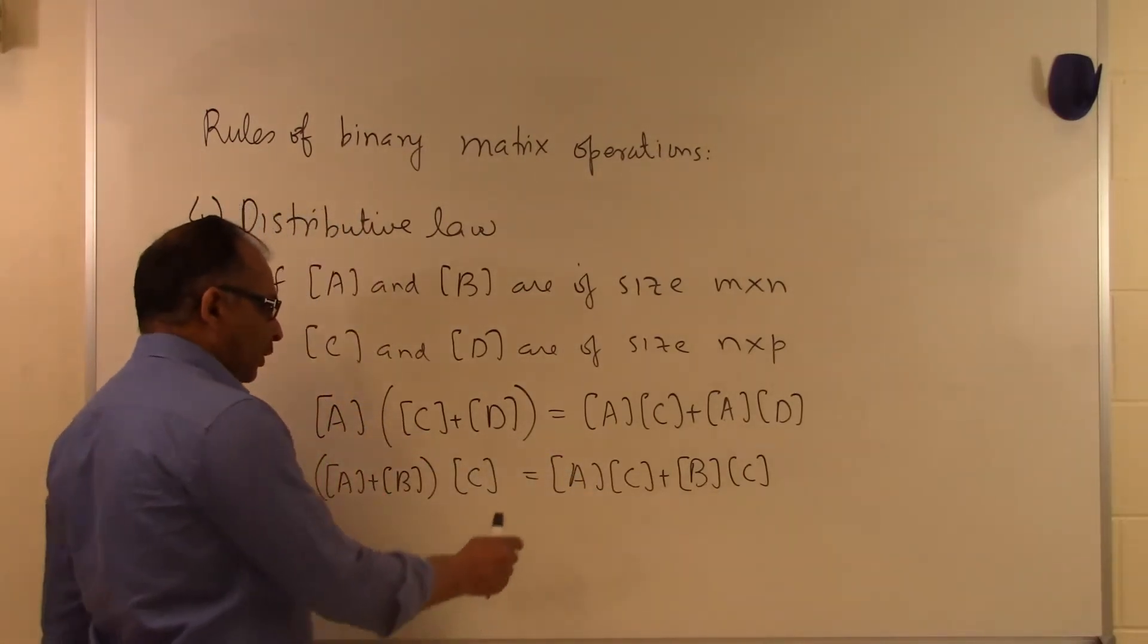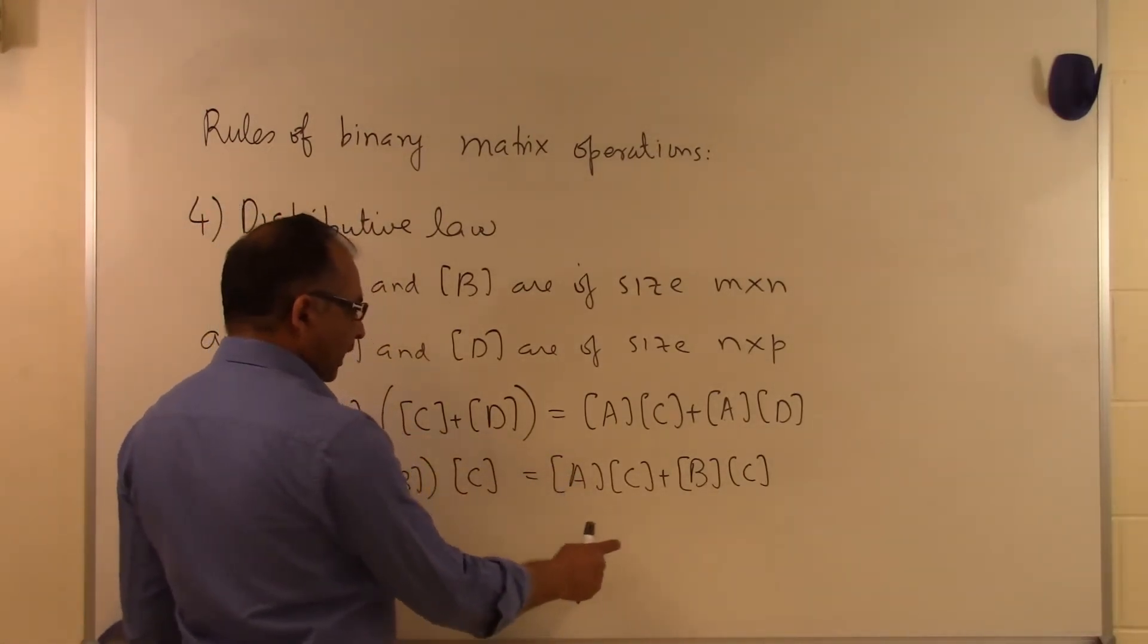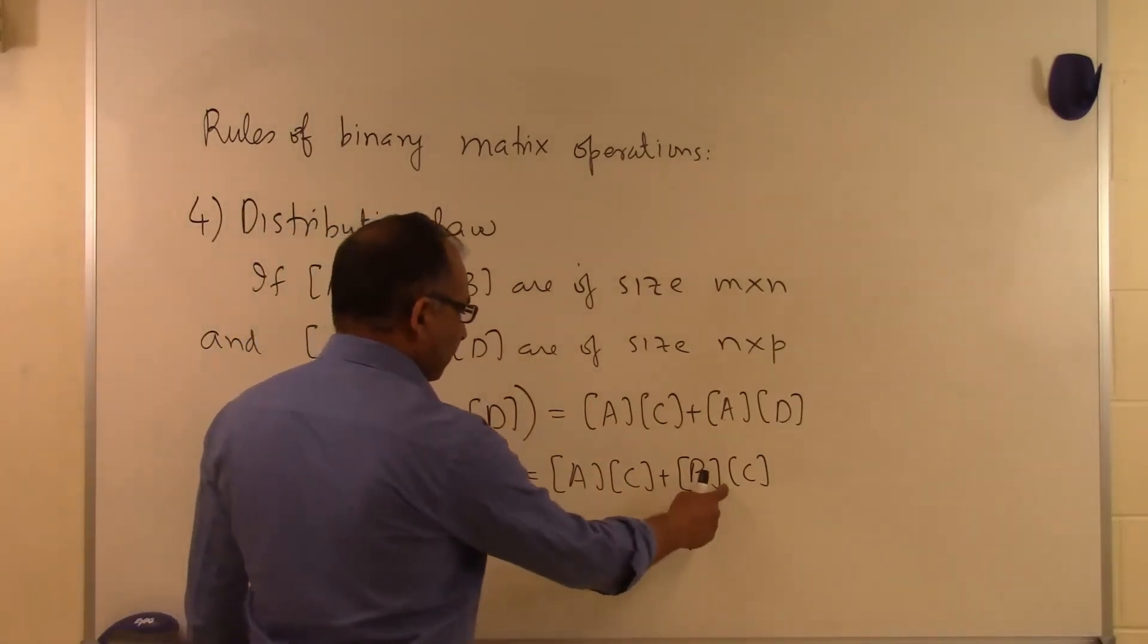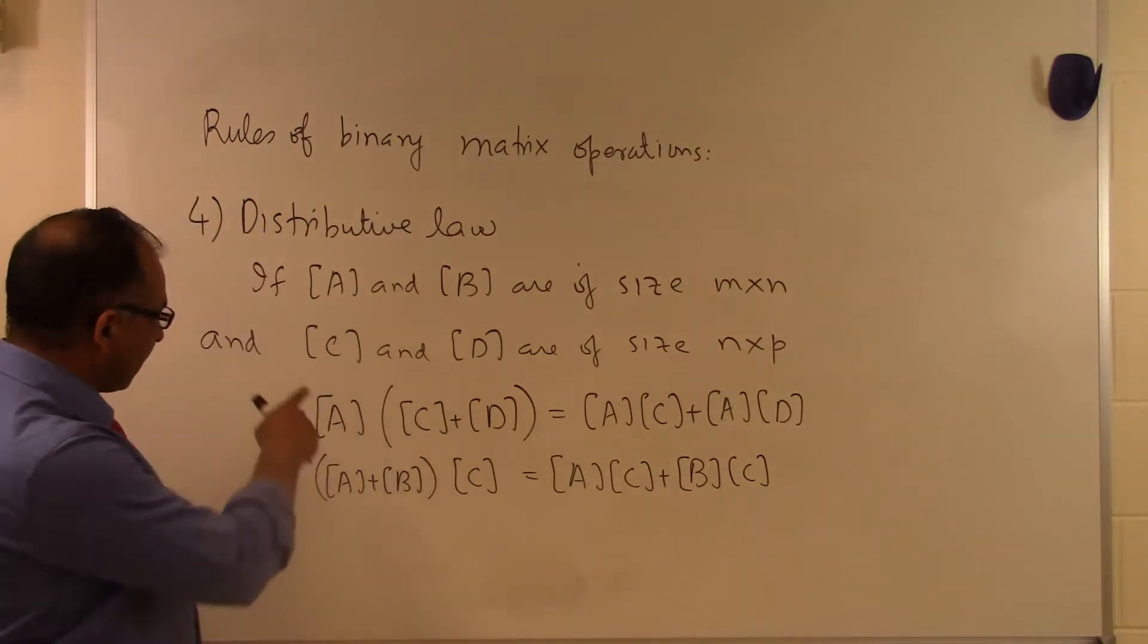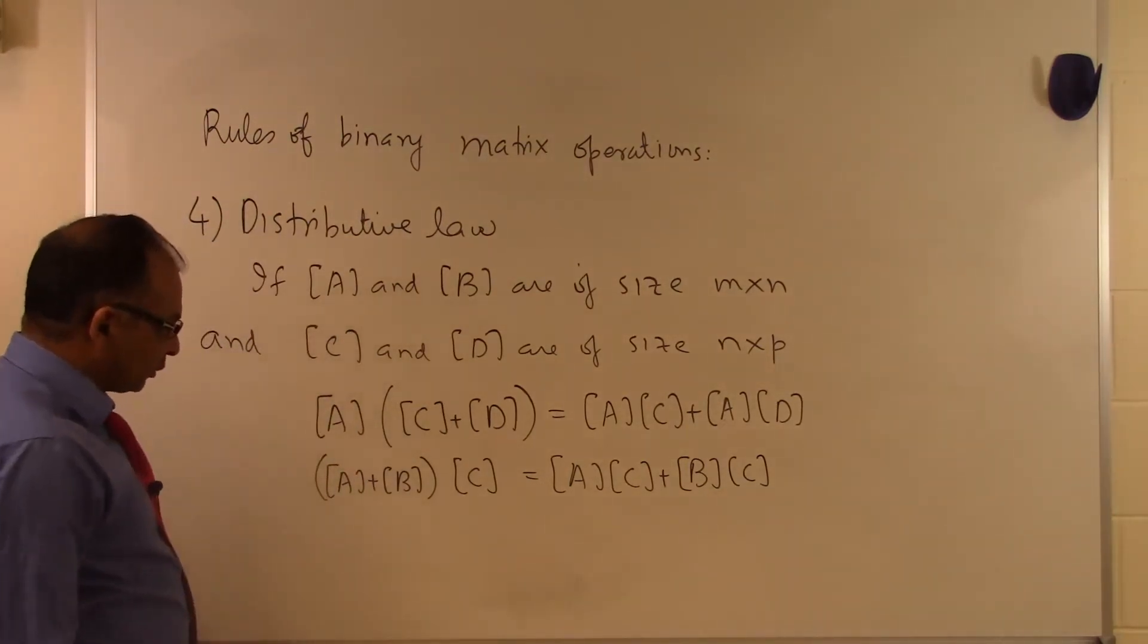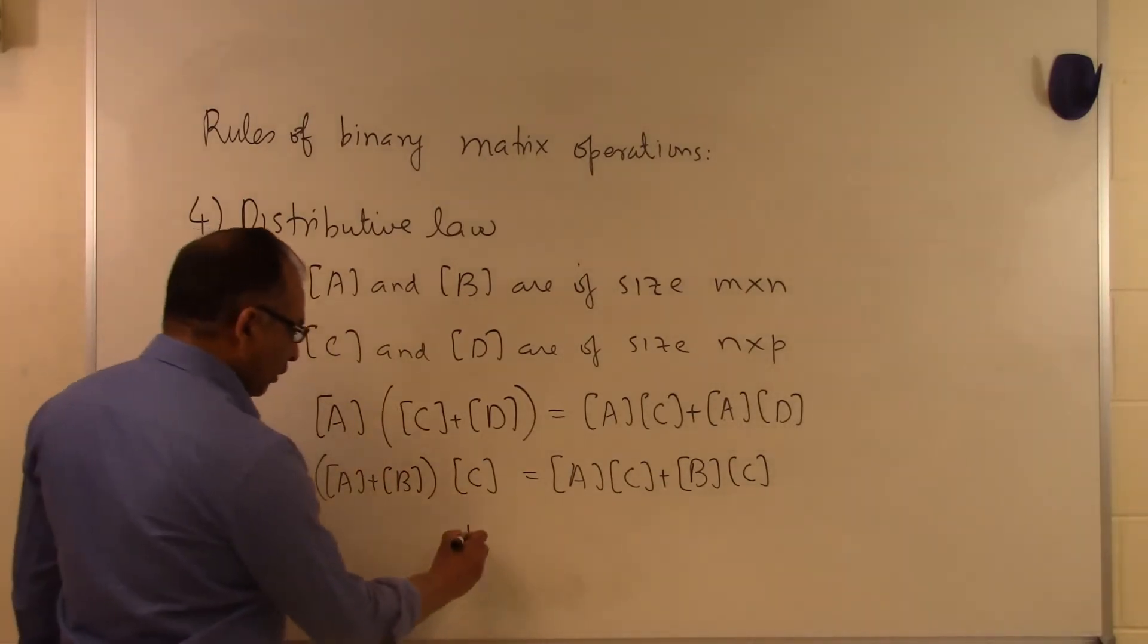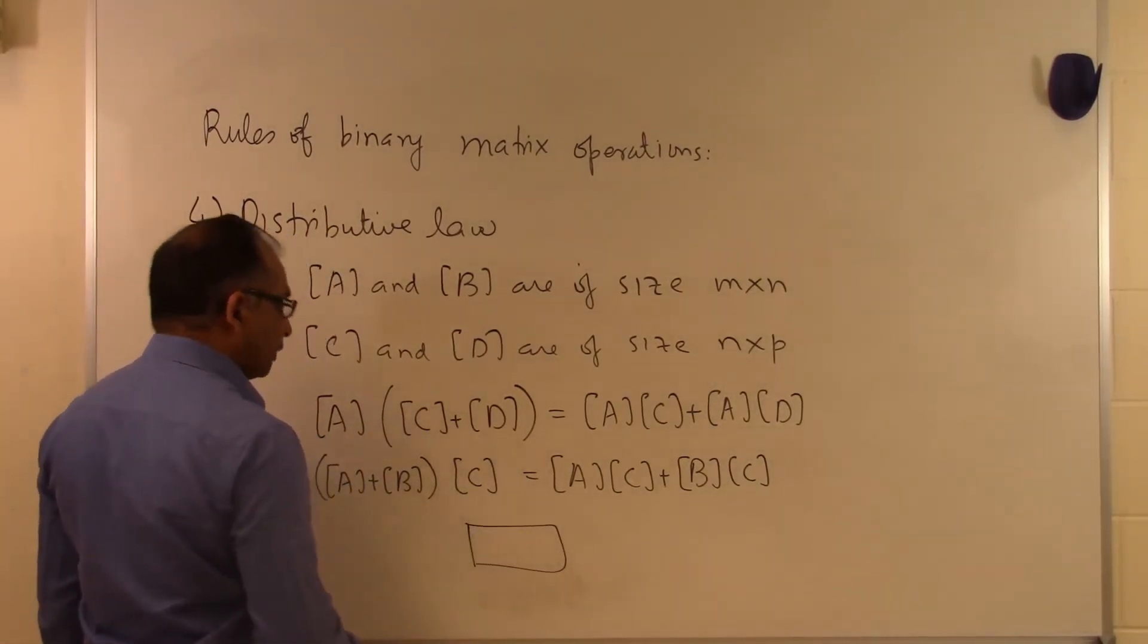Again, the order is important because the number of columns of A is the same as the number of rows of C. The number of columns of B is the same as the number of rows of C, which is the case as per these assumptions which we are making about A, B, C, and D. And that's the distributive law for the binary operations of matrices.